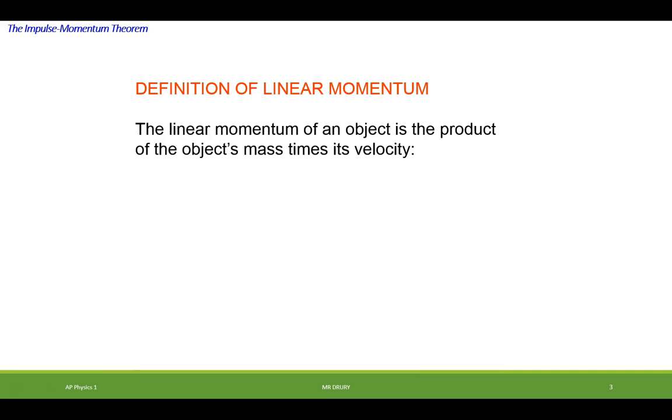Linear momentum of an object is a product of an object's mass times its velocity. In other words, the formula for it would be p, which is a symbol for momentum, is the mass of the object times its velocity.